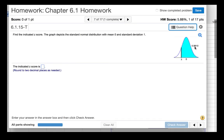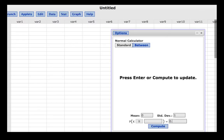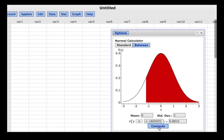And the area is 0.8810. So we will type in 0.8810. Click compute and we find a z-score of negative 1.18.